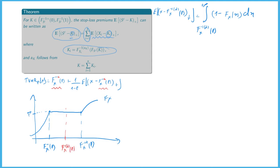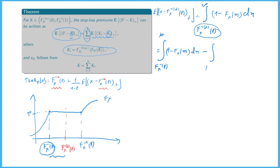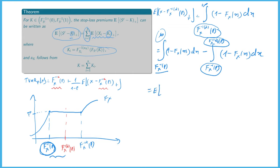If we integrate from F_X^{-1,alpha}(p) to plus infinity, we can do it in two steps: we start at F_X^{-1}(p), but then we integrate over an interval which is too large, so we have to subtract the first part. So we start with the normal inverse, which is always below the alpha inverse, first going from F_X^{-1}(p) to plus infinity, then subtracting the part from F_X^{-1}(p) to F_X^{-1,alpha}(p). The first term is the stop-loss premium with retention F_X^{-1}(p).